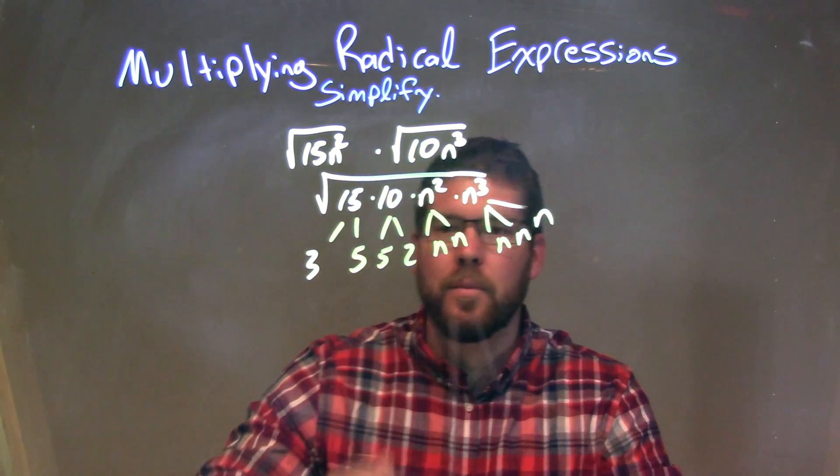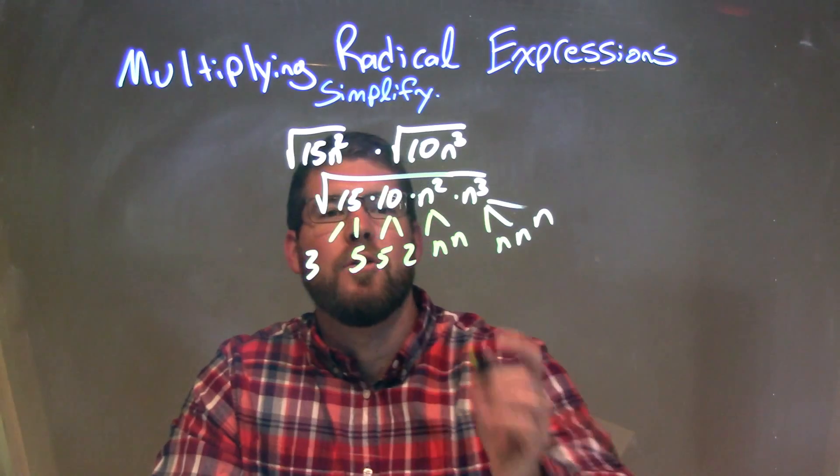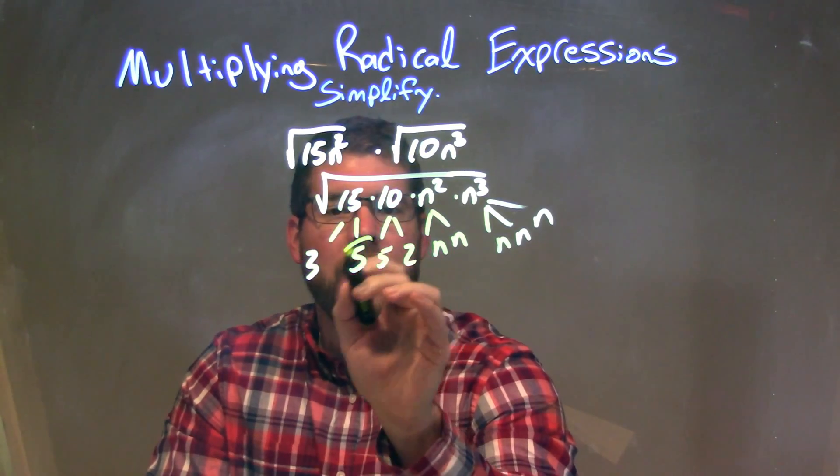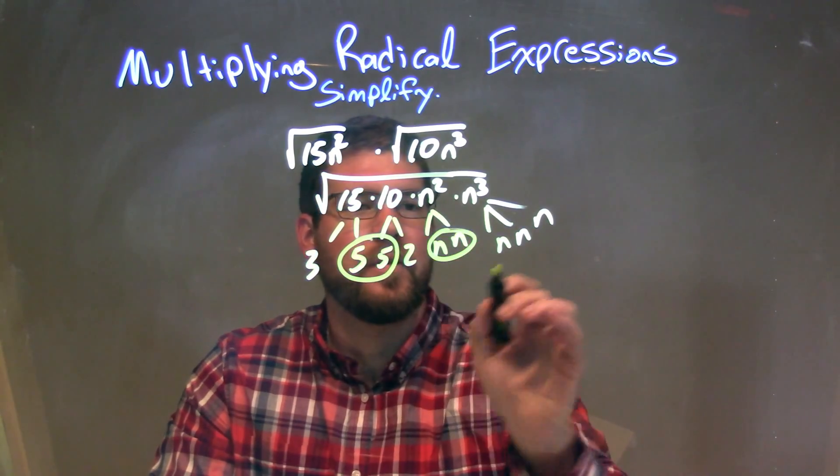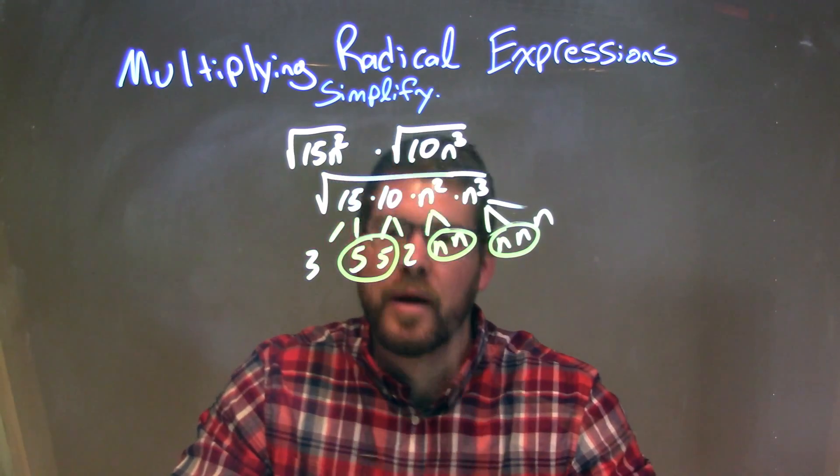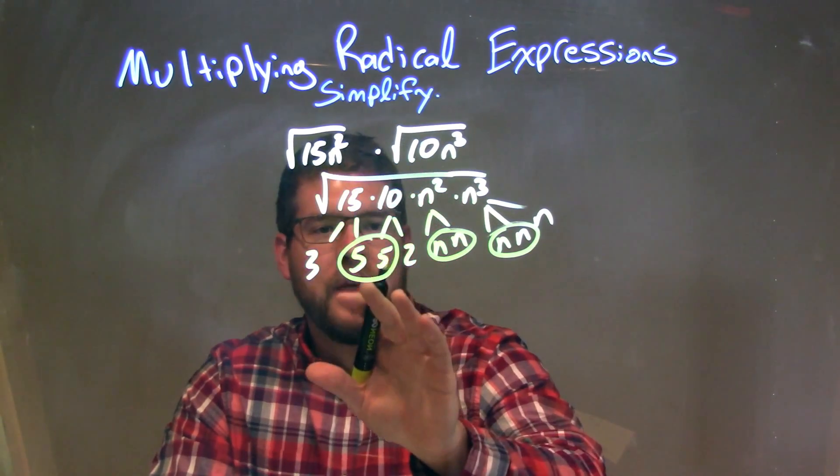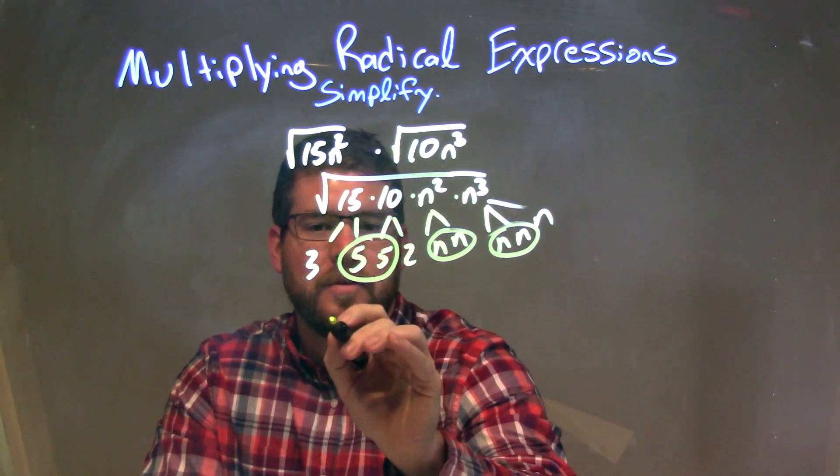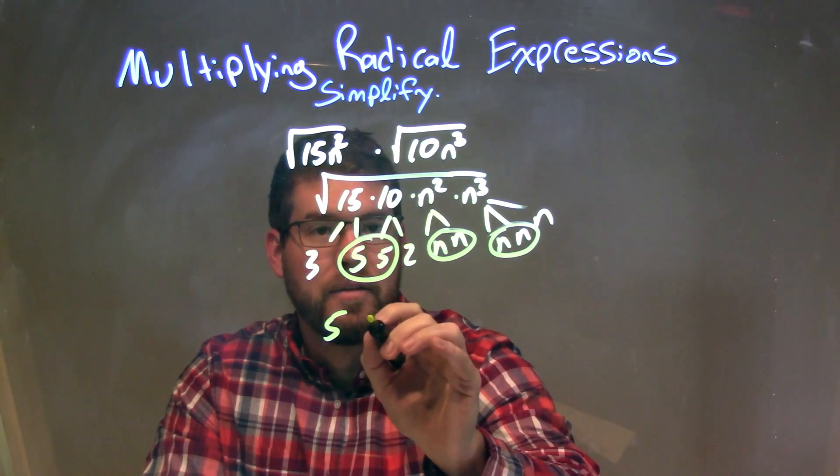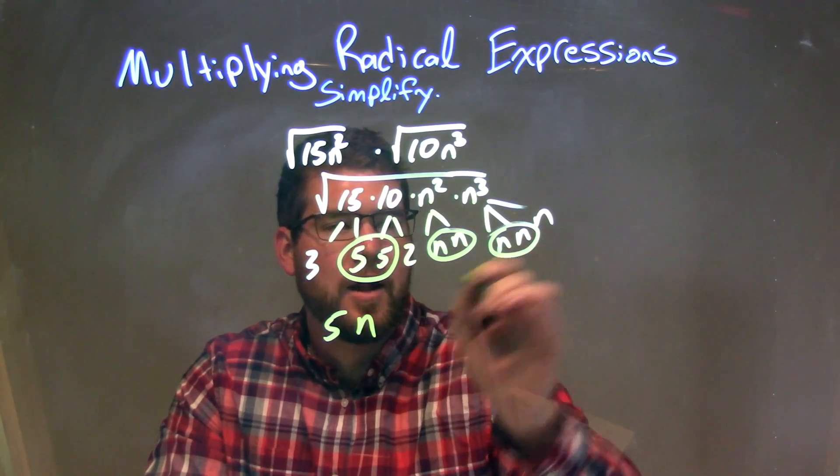So now we have all this broken down here. Let's go find our pairs. We have a pair of 5s right there, a pair of n's right there, and another pair of n's right there. Each pair we can write on the outside as a single, so the 5s is a single 5 on the outside, the n's is a single n on the outside, and another n on the outside.